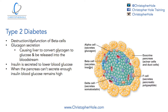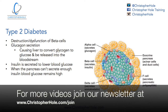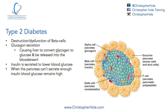We've got these alpha and beta cells. Alpha cells release glucagon and beta cells release insulin. Type 2 diabetes is characterized by the destruction or dysfunction of beta cells. Now it's not necessarily the insulin that's causing the problem — it's the glucagon secretion that's causing the liver to convert glycogen to glucose to be released into the bloodstream.